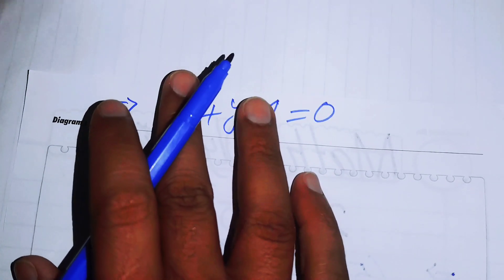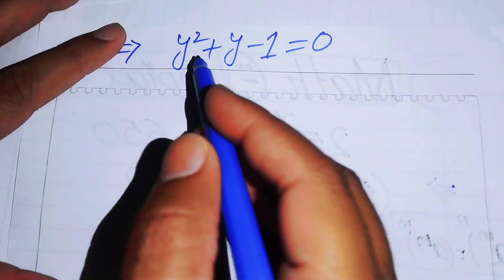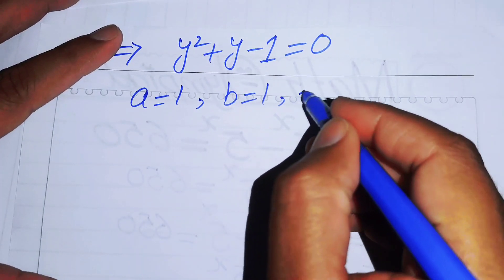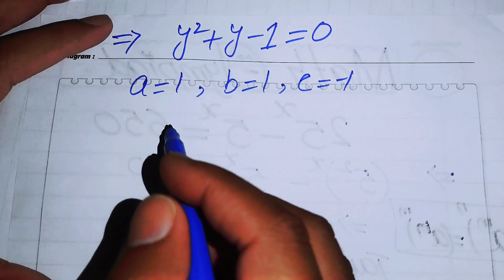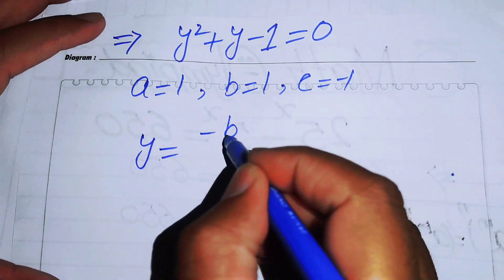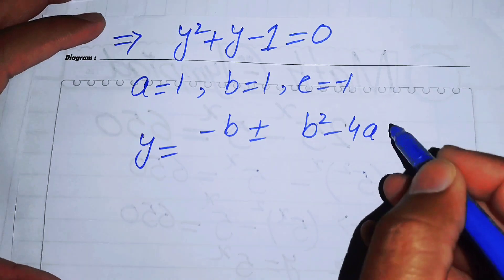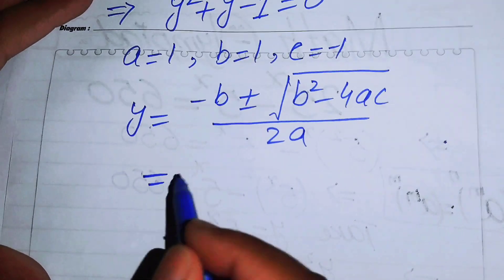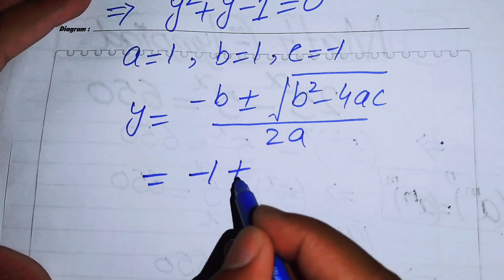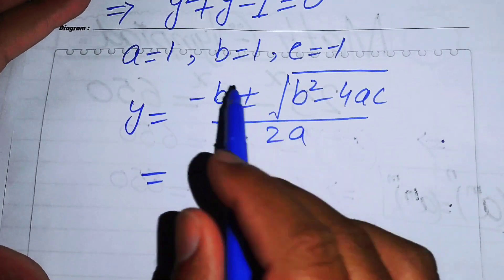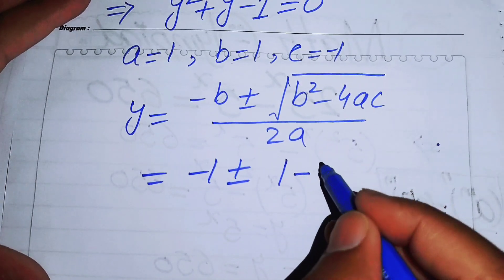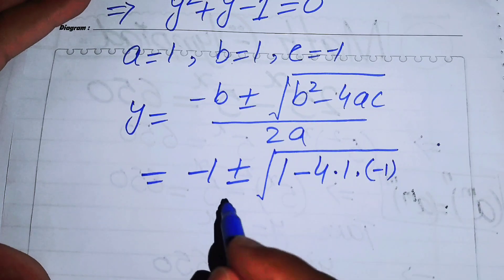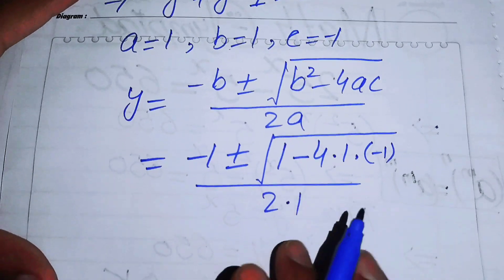We will find the value of y using the quadratic formula. Here a equals 1, b equals 1, and c equals minus 1. The quadratic formula is y equals minus b plus or minus the square root of b squared minus 4ac, all over 2a. Substituting: y equals minus 1 plus or minus the square root of 1 squared minus 4 times 1 times minus 1, all over 2 times 1.